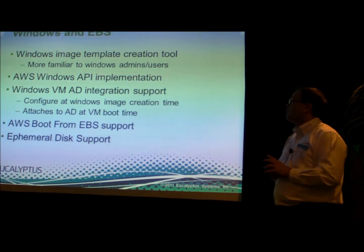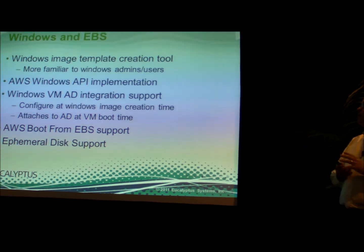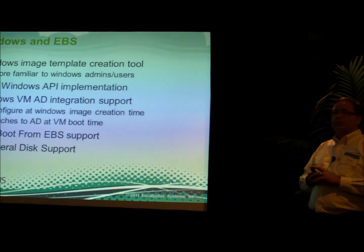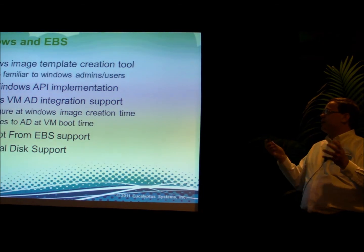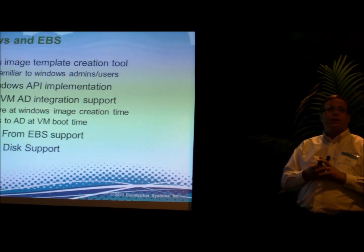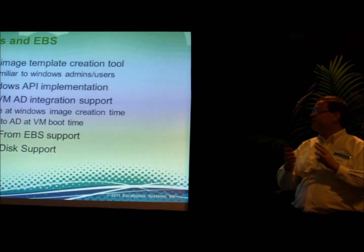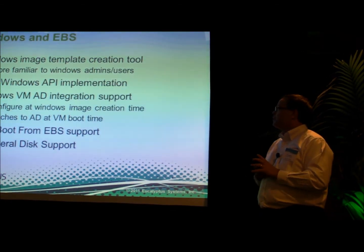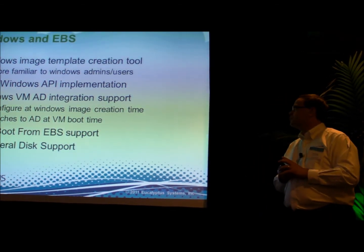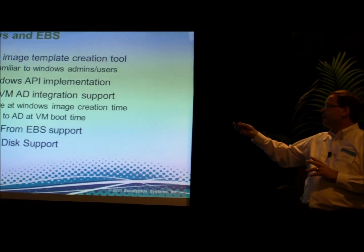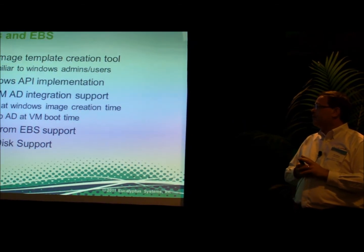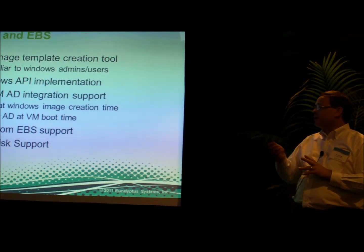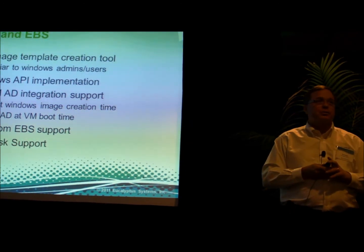We have fleshed out the AWS Windows API implementation — things like get-password and all the other APIs for Amazon Windows are now in Eucalyptus. We also have Active Directory integration support, so you can configure it at creation time. And we have Lufem-EBS support, and we also added ephemeral disk support for Windows.